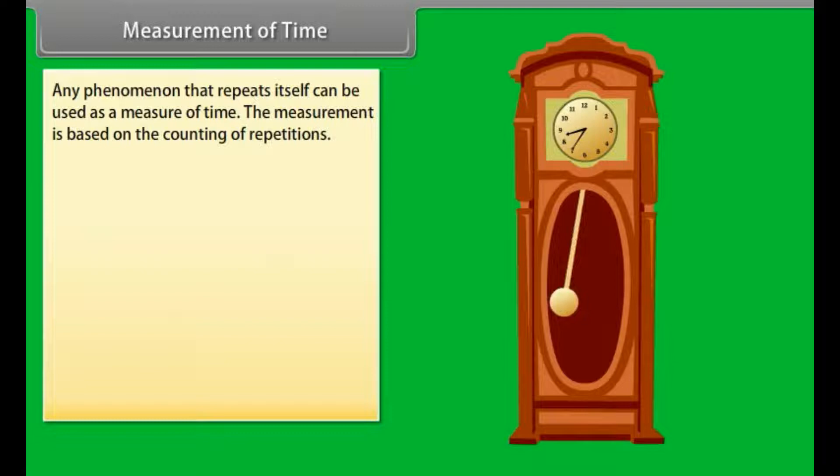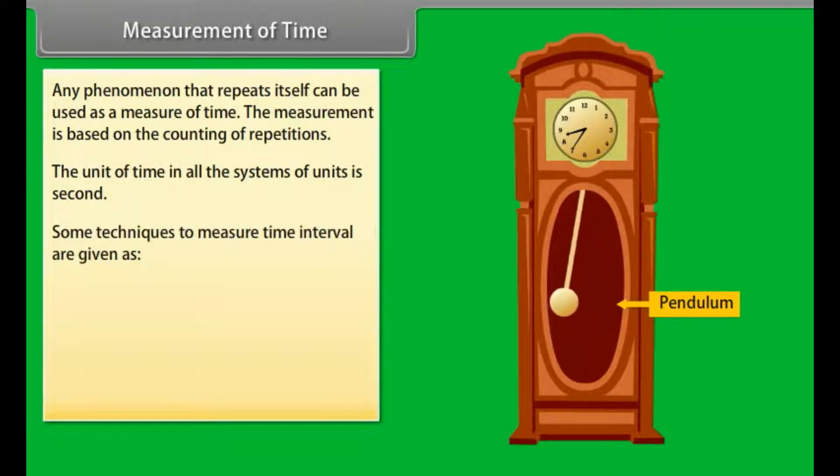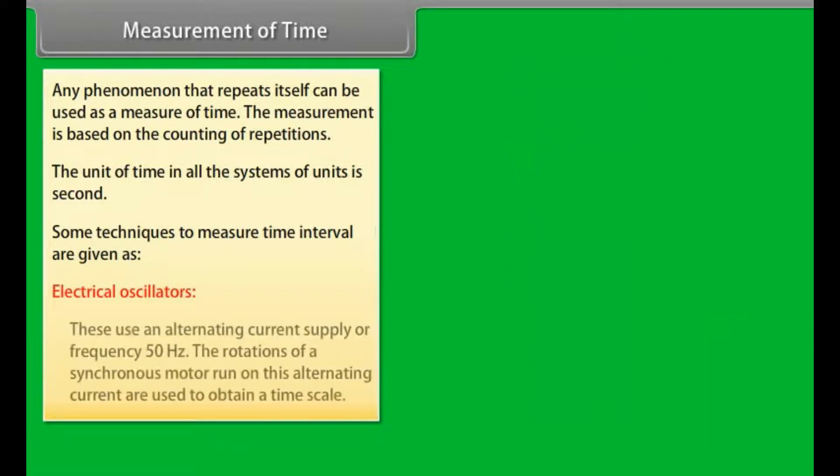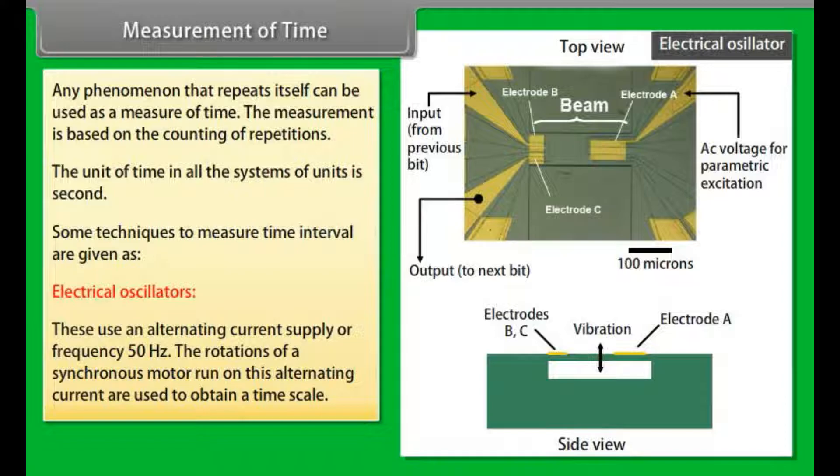Measurement of time. Any phenomenon that repeats itself can be used as a measure of time. The measurement is based on the counting of repetitions. The unit of time in all the systems of units is second. Some techniques to measure time interval are given as: Electrical oscillators. These use an alternating current supply of frequency 50 Hz. The rotations of a synchronous motor run on this alternating current are used to obtain a time scale.